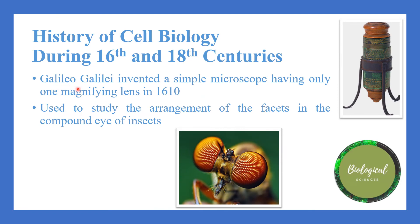Galileo Galilei also invented a simple microscope having only one magnifying lens, which he invented in 1610. This microscope was used to study the arrangement of facets in the compound eye of insects, as you can see in the picture.